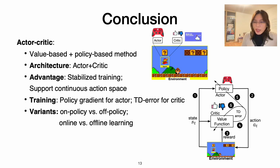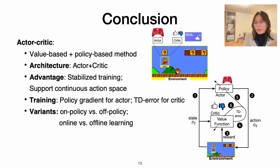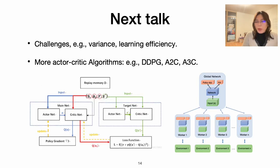In conclusion, I introduced what actor-critic is — basically value-based plus policy-based approach. The architecture includes actor and critic as two main components. The advantages are stable training and support for continuous action space. For training, I introduced how the policy gradient is used to update the actor and TD errors for the critic. There are many variants, like on-policy, off-policy, online learning, and offline learning. Next talk, I will discuss challenges in actor-critic and how algorithms like DDPG, A2C, or A3C address them. Thank you for listening and see you next time.